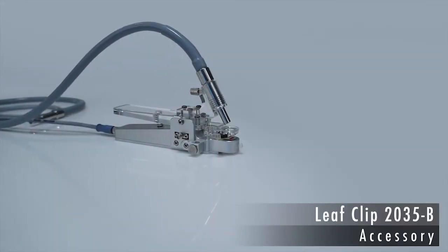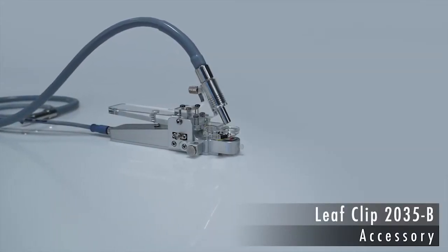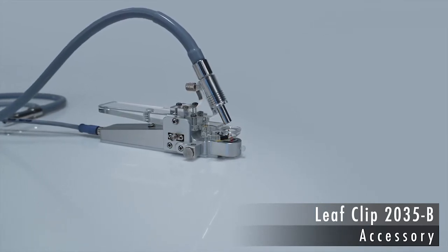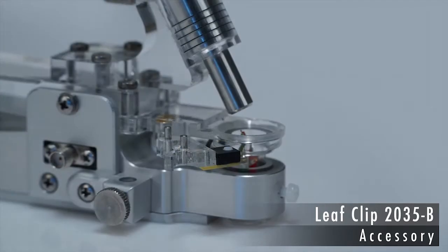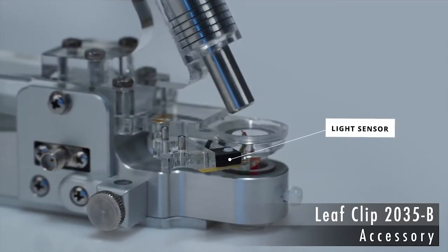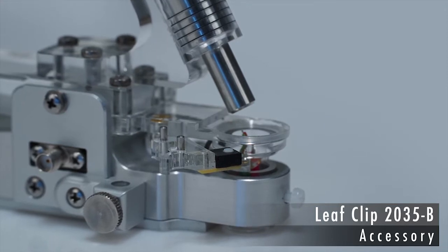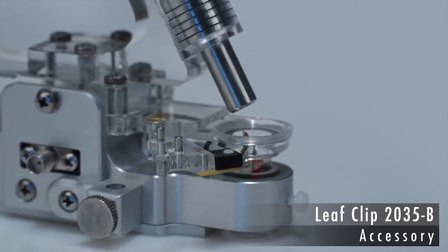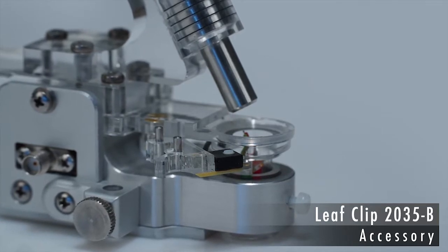The 2035B field clip is designed to measure the performance of Photosystem II when the leaf is exposed to light. The field clip is equipped with a precise PAR sensor. The photosynthetic electron transport rate can then be derived from both the PAR and Photosystem II performance.